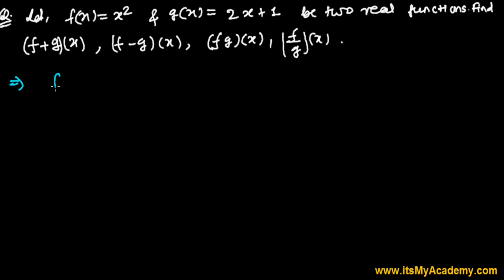So let's first find out (f+g)(x). When we add two real valued functions, we simply add them: (f+g)(x) = f(x) + g(x) = x² + 2x + 1. So (f+g)(x) = x² + 2x + 1, that's it.